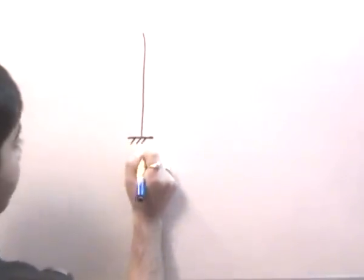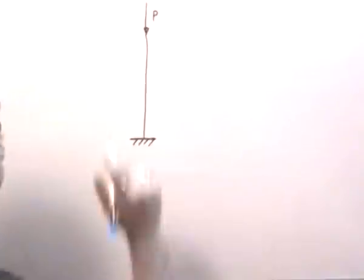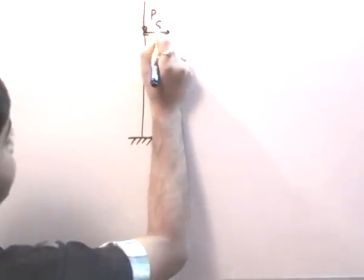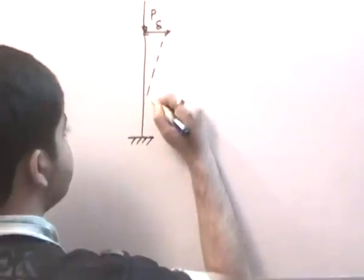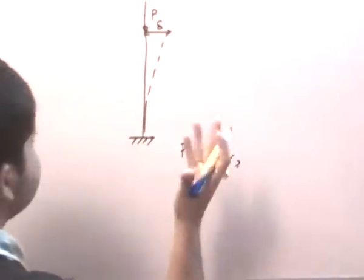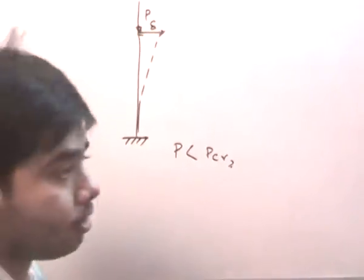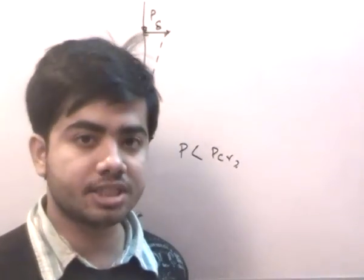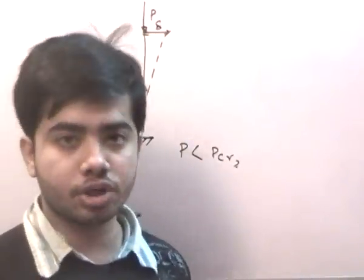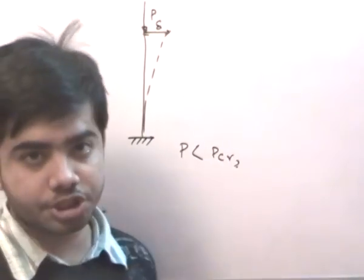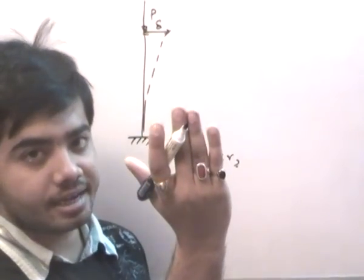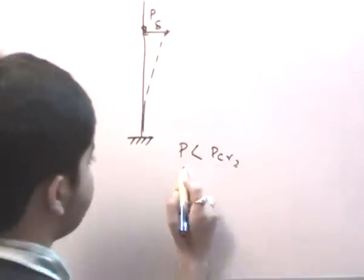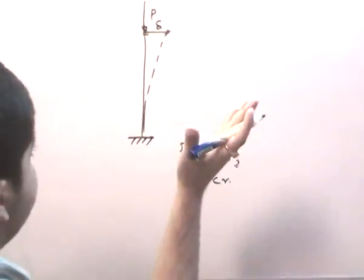In the previous lecture, we saw that for a long column subjected to force P, if we laterally gave it a deflection delta, at values of P less than PCR, it is essentially elastic and once we remove the load it retracts to its vertical stable configuration. But at P equal to PCR, there is neutral equilibrium — the column neither retracts to its original position nor bends indefinitely; it stays static. So at P equal to PCR, we have neutral stable equilibrium.